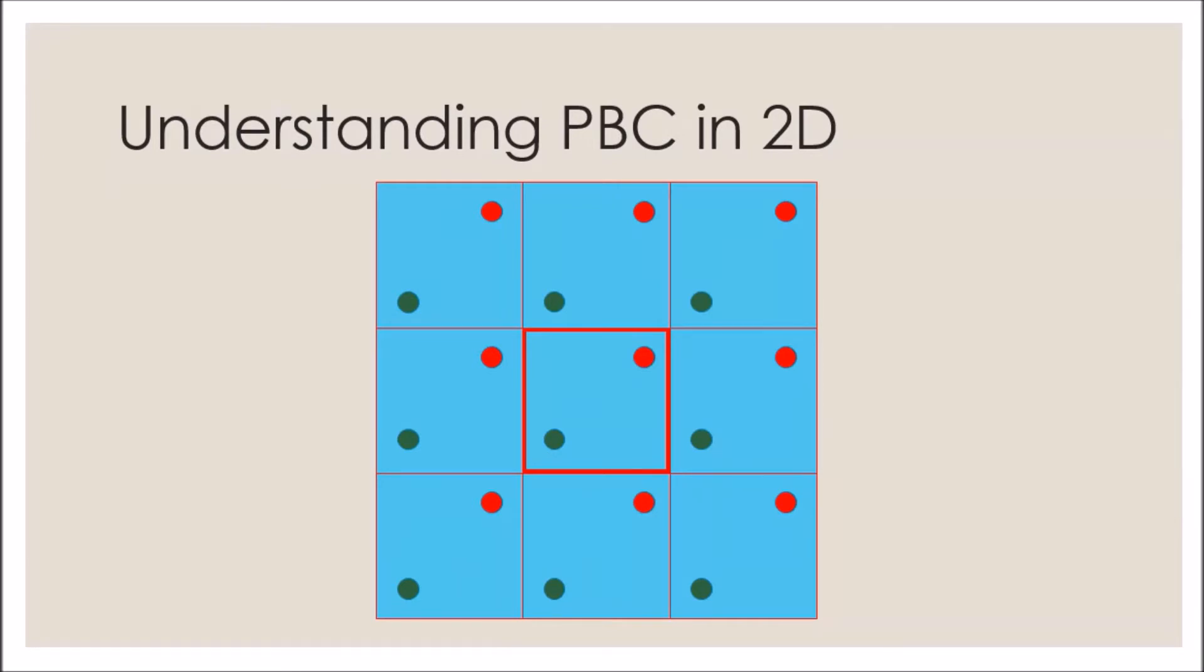For a 2D system we'll have a total of 3 x 3 minus 1, that is 8 images, and for a 3D system we'll have 3 x 3 x 3 minus 1, that is 26 images. What we often need to do in our simulation is calculate force, and force often and mostly depends upon the distance between particles. So how we calculate the distance between particles is really important.